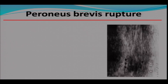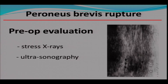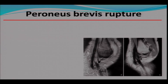For preoperative evaluation, stress X-rays are not very useful — I actually don't think stress X-rays are useful at all. I had stress X-rays as a big part of my thesis many years ago and didn't find any good correlation between stress X-rays and symptoms. Ultrasonography is good — this ultrasound image shows the normal tendon here and the rupture here. MRI is also very good: we can see the normal peroneus longus tendon and the brevis tendon with two splits.